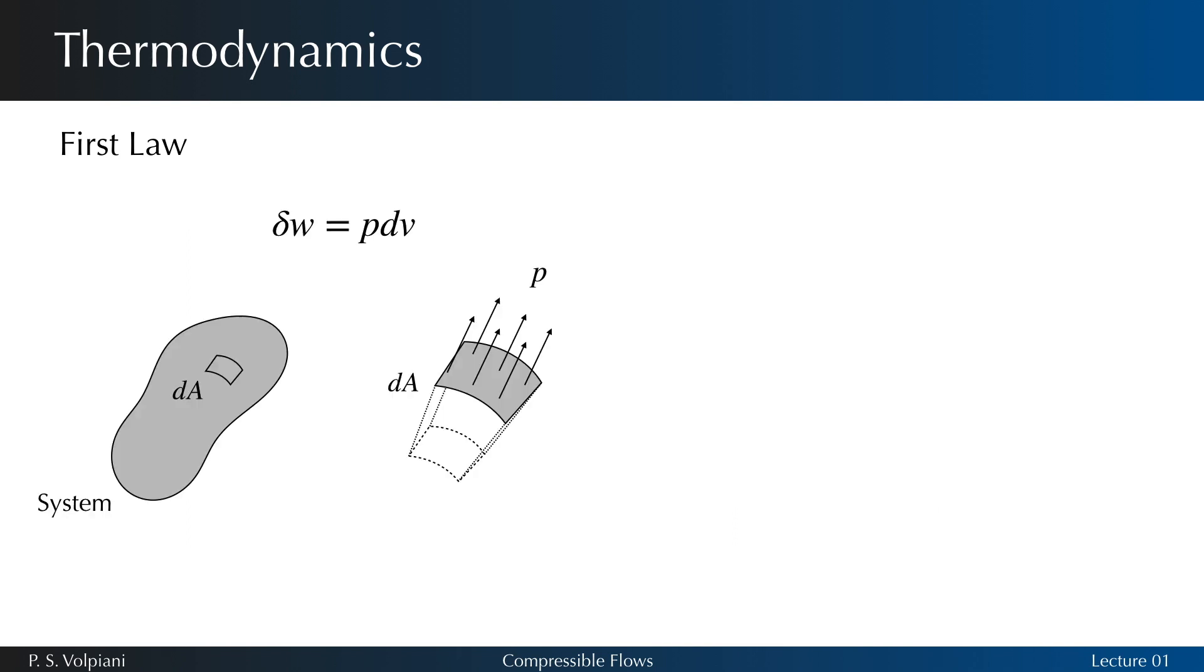The reversible work done by pressure forces during a change of volume for a stationary system equals p dv. The product p dv must be seen here as the product of the pressure by elementary surface of the fluid element, which corresponds to the force exerted on this element itself multiplied by the displacement of the element, to translate the work of this force.